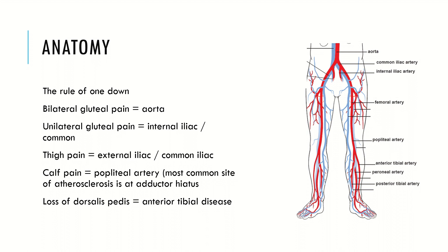The key anatomy: you have the aorta dividing into the two common iliac arteries, which then divide into the internal iliac artery that supplies the gluteal muscles, and the external iliac. The external iliac goes into the femoral artery at the inguinal canal, which then supplies the muscles of the thigh. At the adductor hiatus, this splits into the popliteal artery, which then splits again into the anterior tibial artery and the tibial trunk, supplying the calf. The anterior tibial artery goes on to form the dorsalis pedis, whereas the posterior tibial artery is palpated around the lateral malleolus.